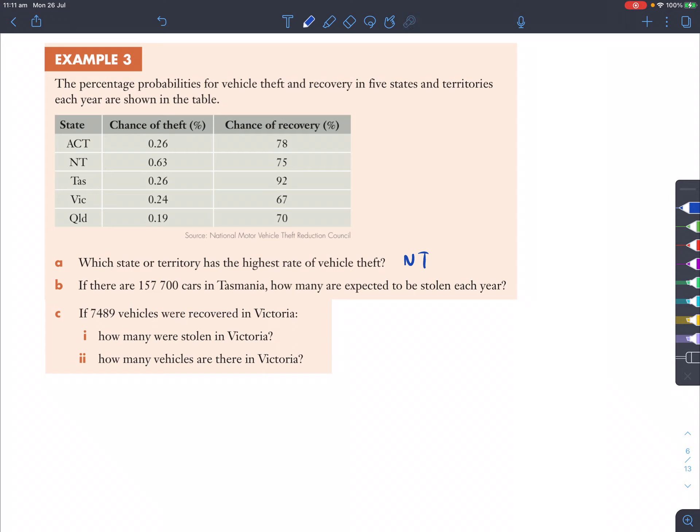Now, for question B, if there are 157,700 cars in Tasmania, how many are expected to be stolen each year? So we're looking at Tasmania, which is this. Now, the chance of theft is 0.26%, so all we've got to do for this question is we're going to multiply 0.26% of the total number of cars in Tasmania, and that will get us 410.02, but you know that cars can't be like 0.02 of them, so you have to round it off to the nearest whole number and that will be 410.